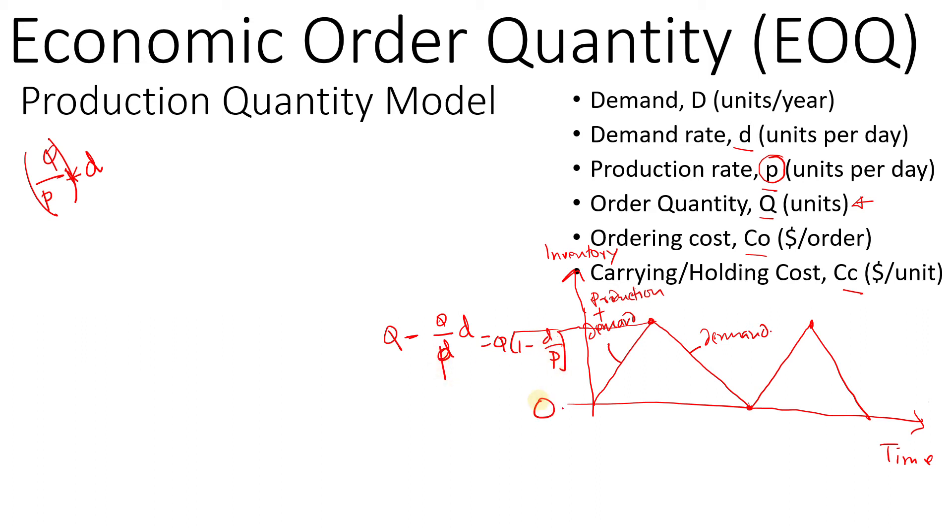If we have 0 inventory at the beginning and the maximum is Q times (1 minus d by p), then the average would be the maximum, which is Q(1 minus d by p) plus 0 divided by 2. So the average number of inventory is this.